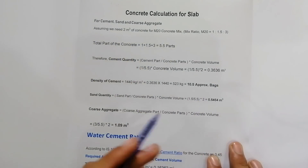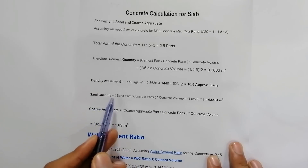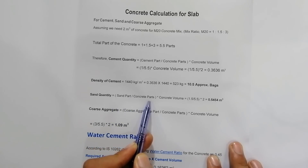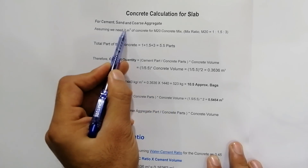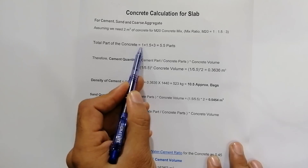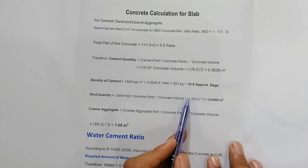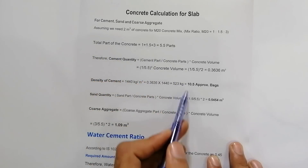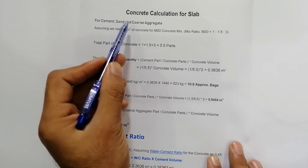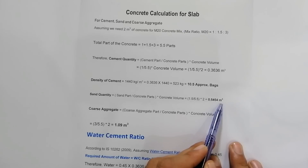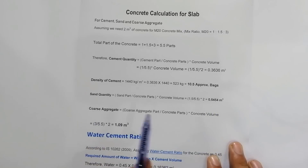Now to find the sand quantity: Sand quantity = (Sand part / Total concrete parts) × Concrete volume. Sand part = 1.5, total concrete parts = 5.5, concrete volume = 2 m³. So: 1.5 / 5.5 × 2 = 0.5454 m³ of sand is required.